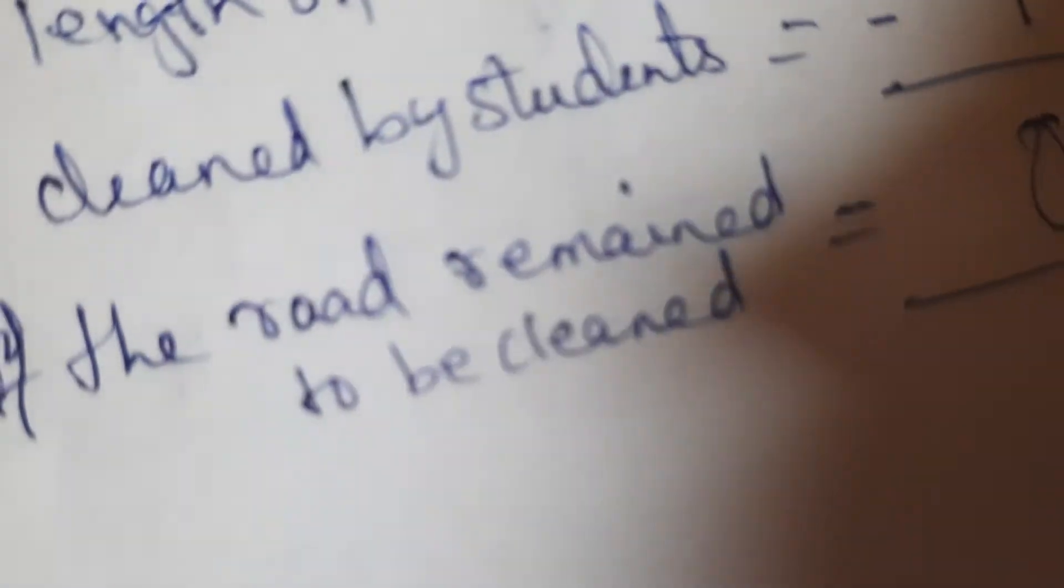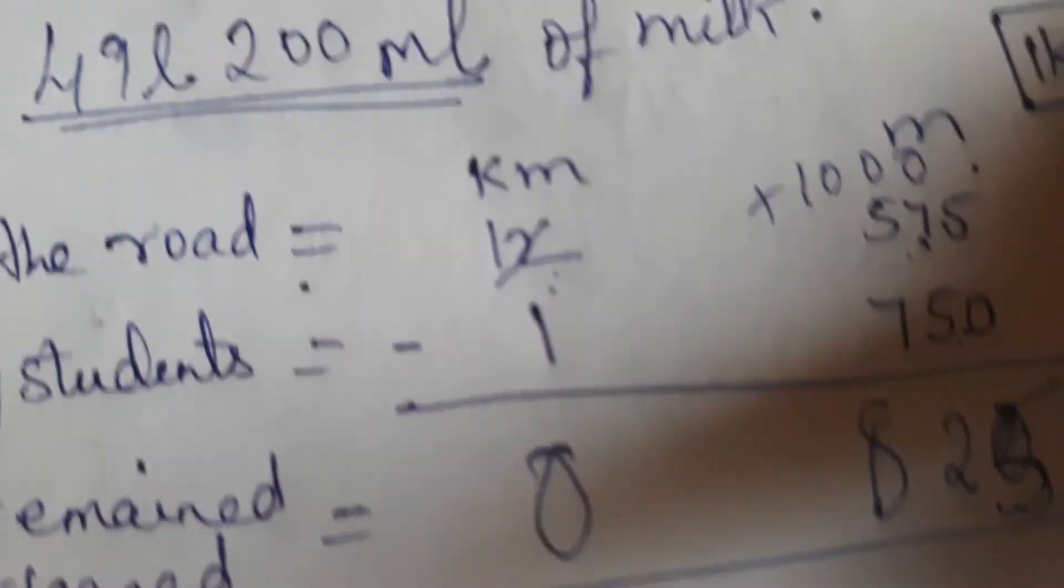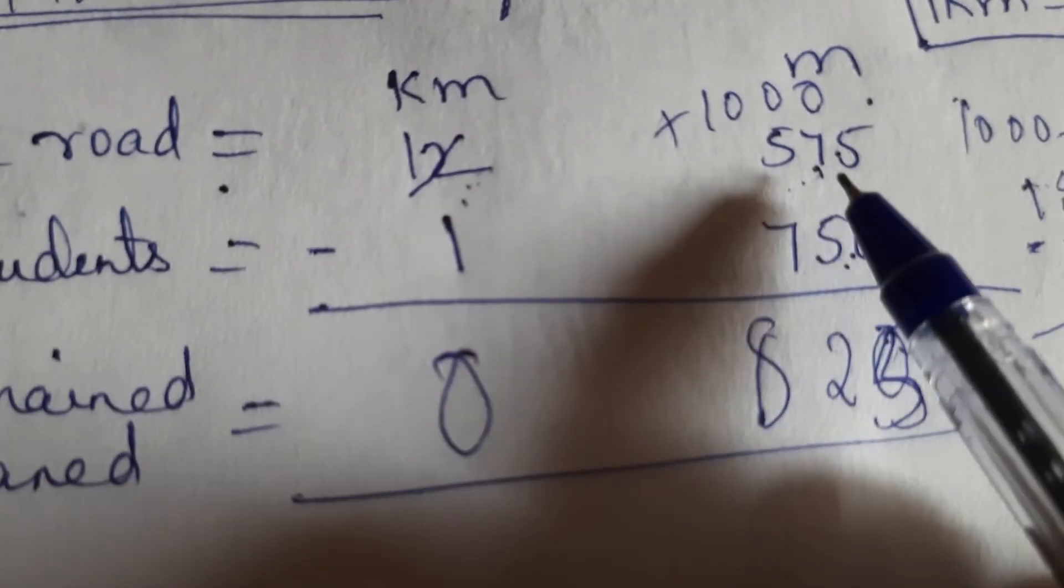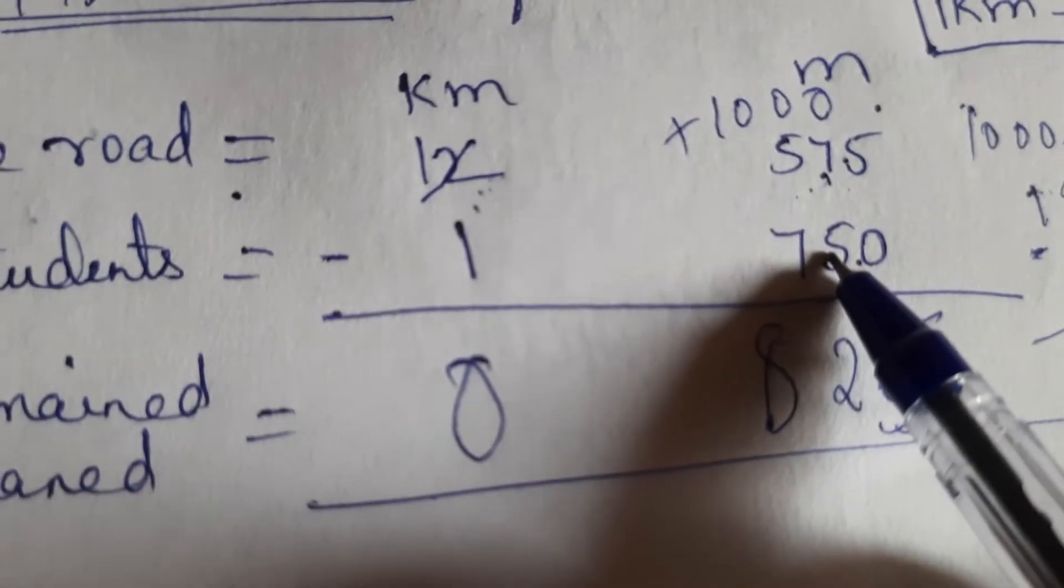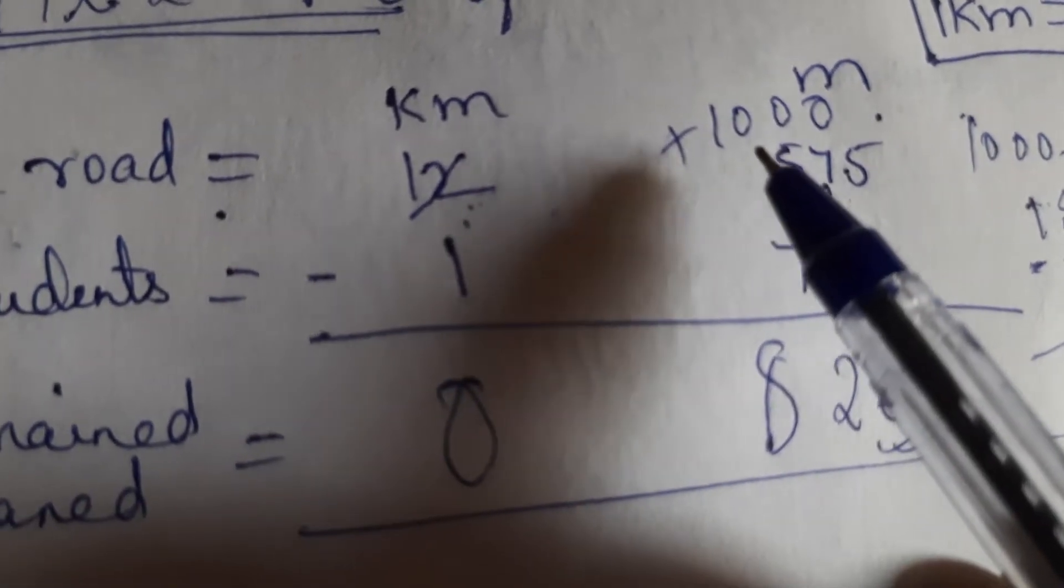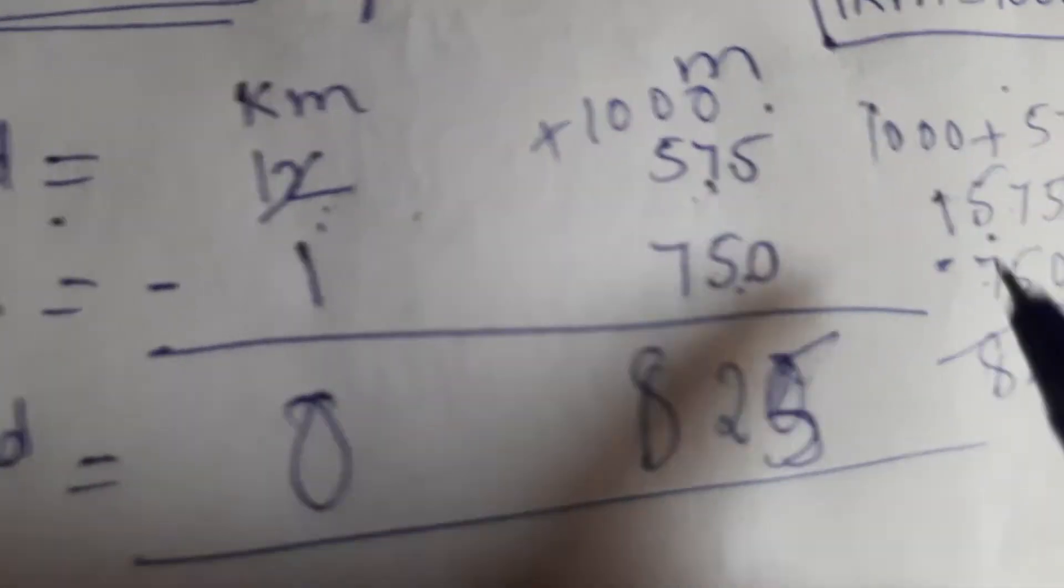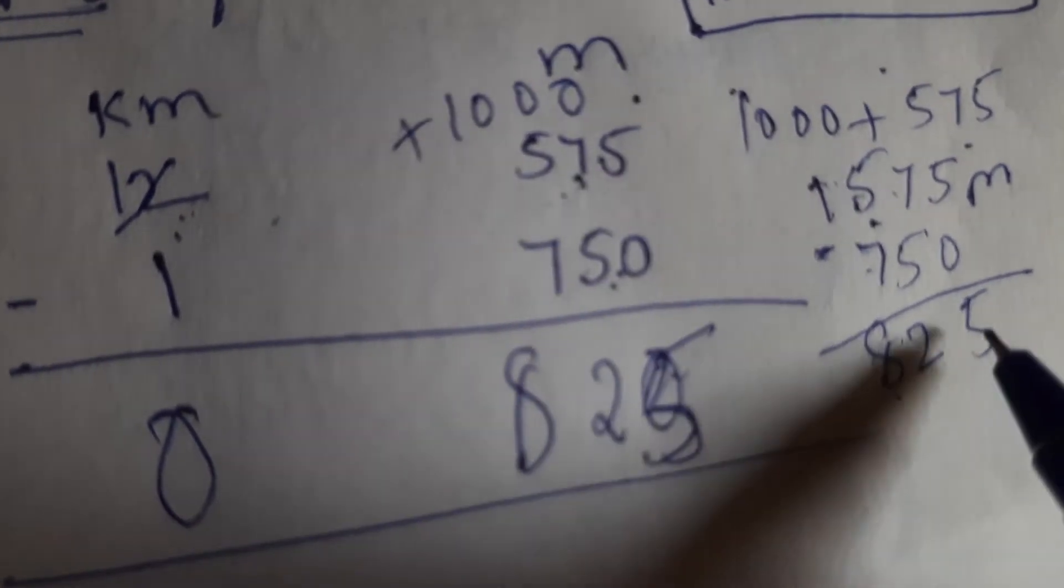825 meter. And your 1 minus 1 is 0. That means 0 kilometers. 825 meter is remained to be cleaned. So only 825 meter is balanced to be cleaned children. So you will write down over here. 825 meter remained to be cleaned. Okay. Remained to be cleaned. Hope this is understood this sum. So from kilometers we borrowed so that we can minus 750 meter. So when we borrow from kilometer it gives us 1 kilometer which is 1000 meter. So 1000 we add to it and then we subtract. So we get 825.